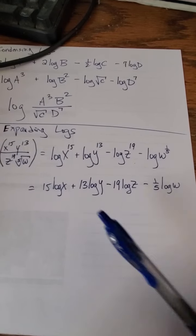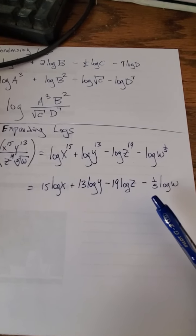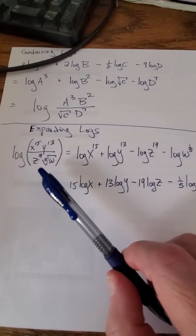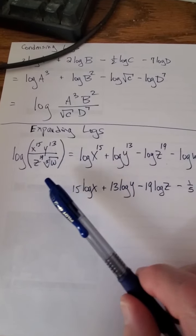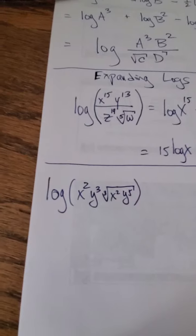15 log x plus 13 log y minus 19 log z minus 1/5th log w, and that's equal to the original log of this giant fraction x to the 15th y to the 13th over z to the 19th 5th root of w.